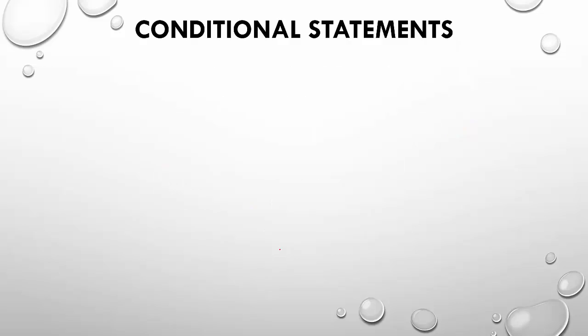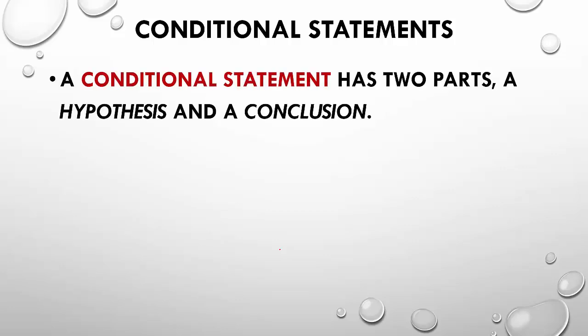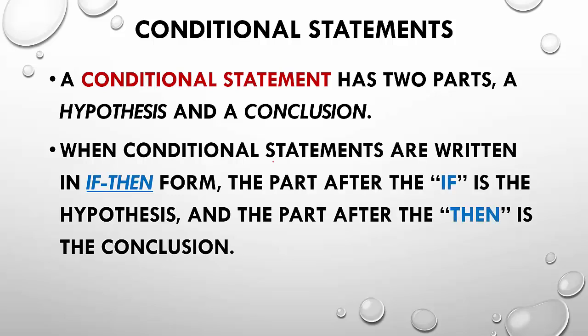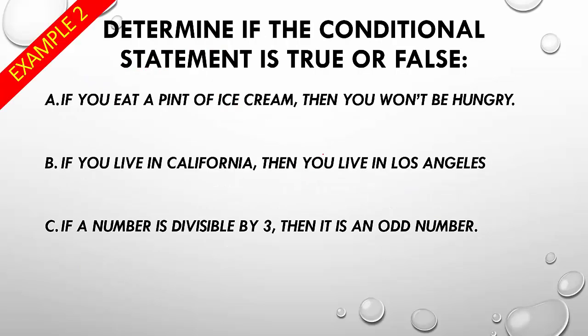Now, conditional statements, this is where it might get a little confusing, but it will make sense if you just try and think logically. So, a conditional statement has two parts, a hypothesis and a conclusion. Hypothesis is always going to come first. So, conditional statements are usually written in if-then form. The part that immediately follows the if is the hypothesis, and what the part that immediately follows the then is the conclusion. So, sometimes we get, you'll see it written like this, and this basically means if P, then Q. So, if you see this, that's what that means.